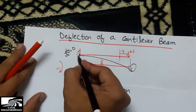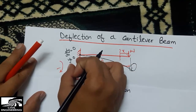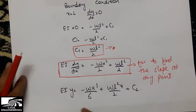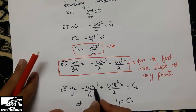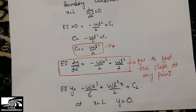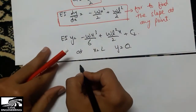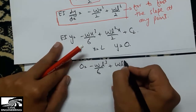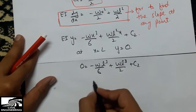Again we find the boundary condition. At x equals L, the deflection y equals zero, because the fixed support does not deflect. So at x equals L, y equals zero. Substituting this into the equation, we get 0 equals minus WL³ divided by 6 plus WL³ divided by 2 plus C2.